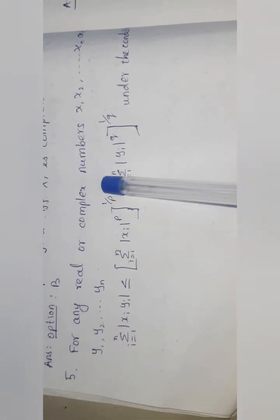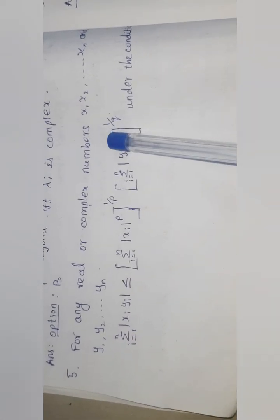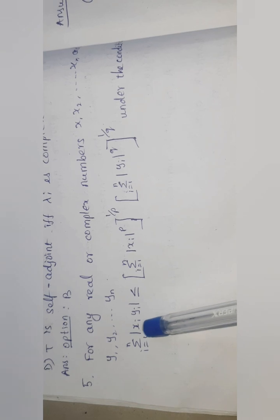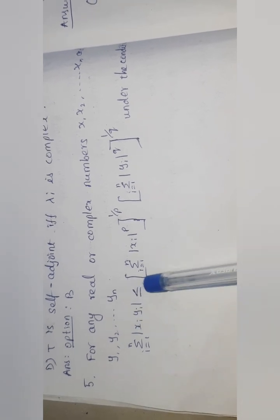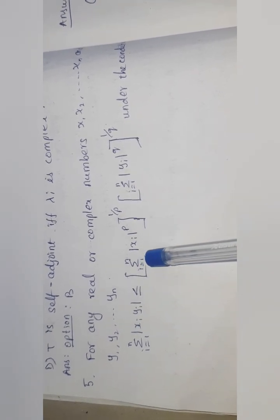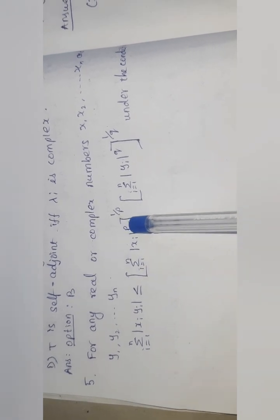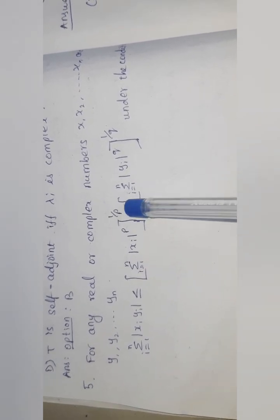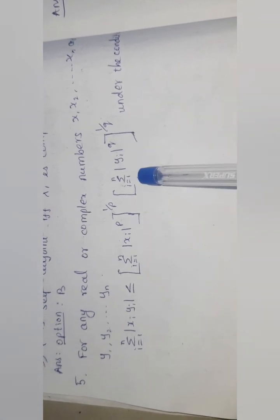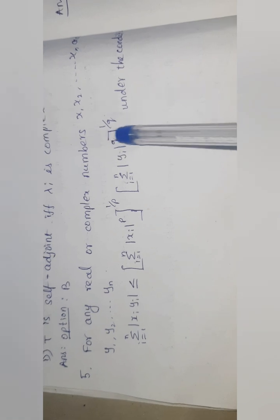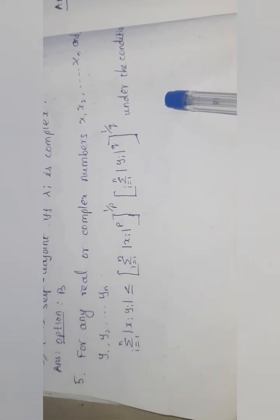For any real or complex numbers x₁, x₂, ..., xₙ and y₁, y₂, ..., yₙ, the summation from i=1 to n of |xᵢyᵢ| is less than or equal to the product of (∑|xᵢ|^p)^(1/p) and (∑|yᵢ|^q)^(1/q), under certain conditions.